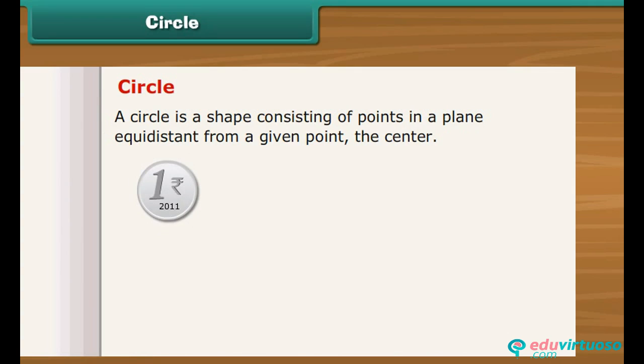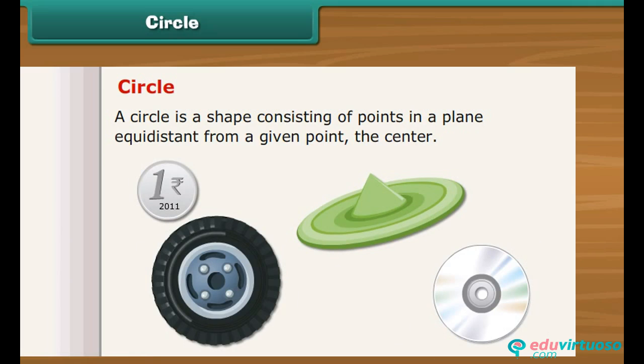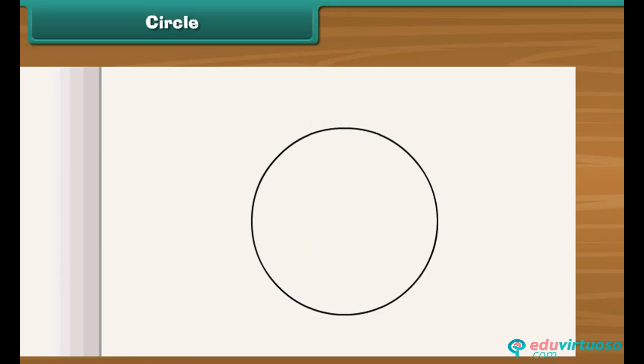One rupee coins, flying disk, wheel, CD are circular in shape. The length of the line segment from center of the circle to any point on the circle is called the radius. Twice the radius of the circle is called the diameter of the circle. A circle of a given radius can be drawn with the help of a compass.